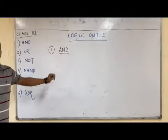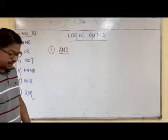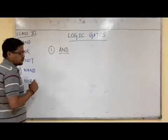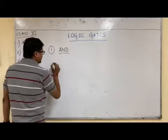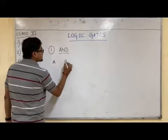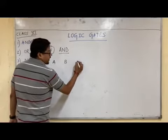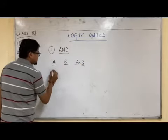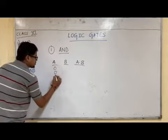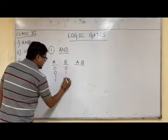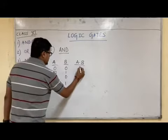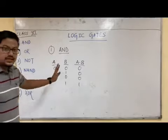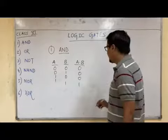First of all, let us focus on the AND logic gate. AND means dot. If there are two variables A dot B, the output for the AND logic gate will be A dot B. For two variables: 0·0=0, 0·1=0, 1·0=0, 1·1=1. These rules we know very well.